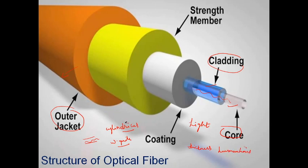The material used for preparing optical fibers is usually glass or plastic. Fibers made of glass are very strong, while plastic fibers are not as hard or strong as glass. Based on the application, either material is chosen, but glass-based fibers are very popular and mostly preferred.